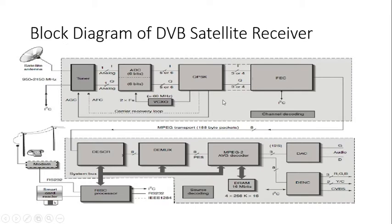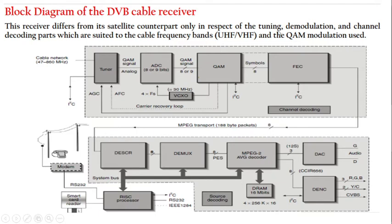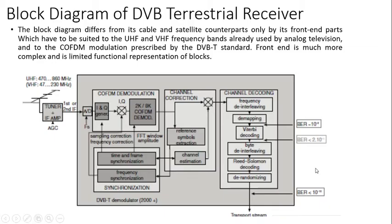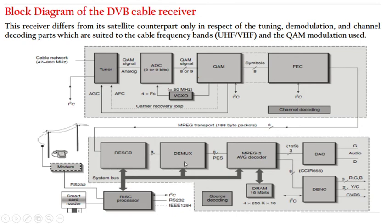The same steps apply to the DVB cable receiver. The key differences are in tuning frequency — which depends on the medium — and most importantly in modulation: QPSK for satellite versus higher-order QAM for cable. All other parts remain the same. However, for the terrestrial receiver, the front end of DVB-T will have additional steps due to COFDM modulation at the transmitting side. The descrambling, demultiplexing, and source decoding parts remain the same for DVB-T as well.